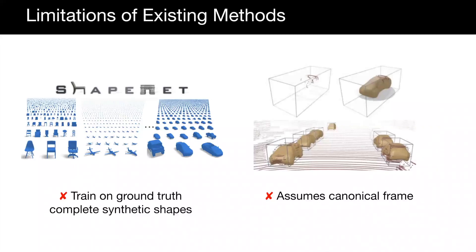Previous shape completion methods require ground-truth shapes from synthetic data and assume the input partial point cloud is aligned and normalized to a canonical frame.